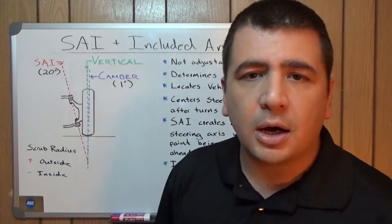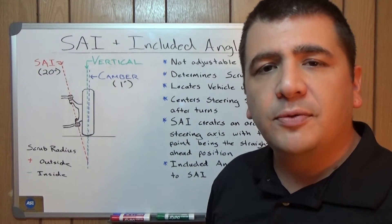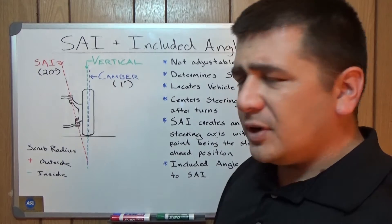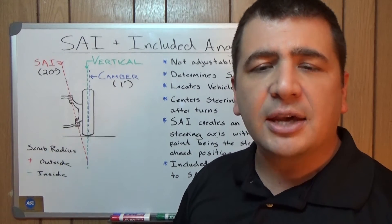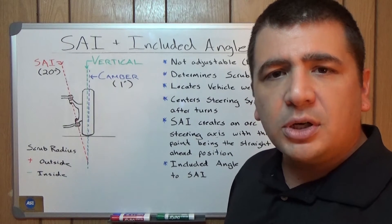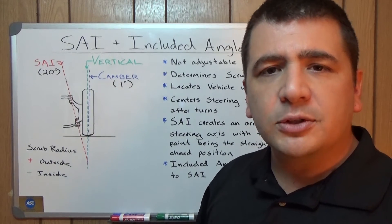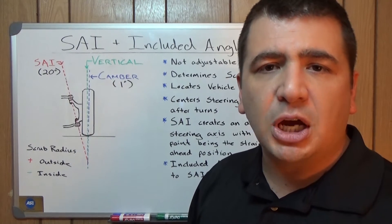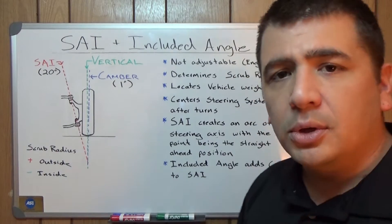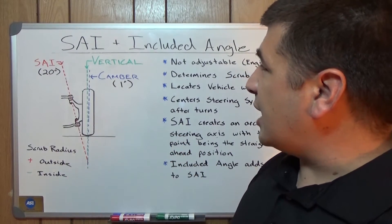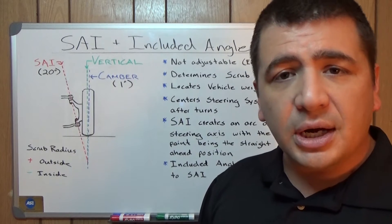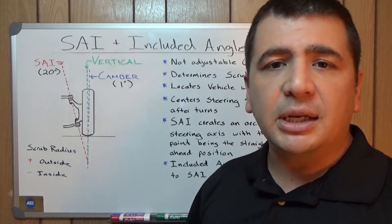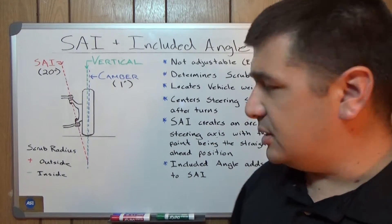Hi, I'm Kyle with DIY Auto Homeschool and this is our first video in our series on Advanced Alignment Angles. In our last video we talked about the basic alignment angles: caster, camber and toe. In this series we're going to talk about some of the alignment angles that are not directly adjustable but still play really big parts in the steering and suspension geometry of a vehicle. The first ones we're going to look at are steering axis inclination, included angle and scrub radius, although the scrub radius isn't an angle but it does play a big part in the steering system.